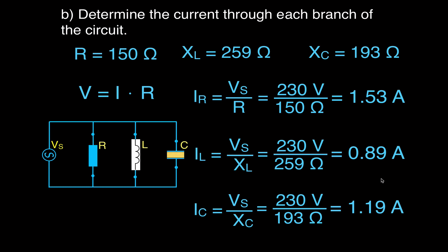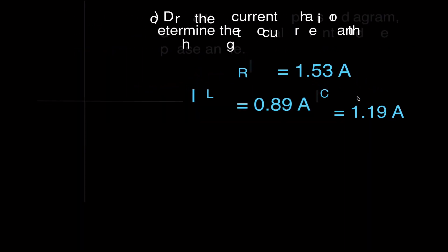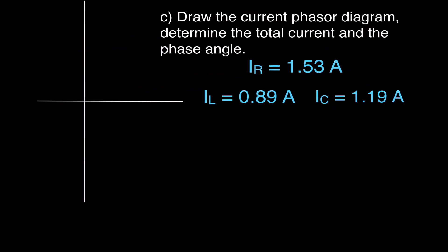Those are the currents for each branch. Those currents can change over time because we have an alternating current source. Whether you use the max voltage or the RMS voltage, you get the corresponding current. Now we can draw the phasor diagram, get the total current, and also the phase angle — the angle between the current and the voltage.